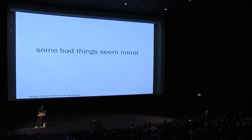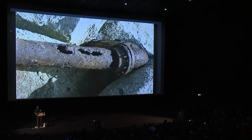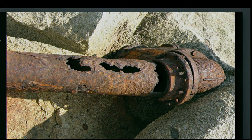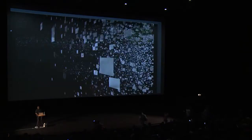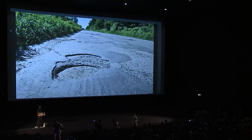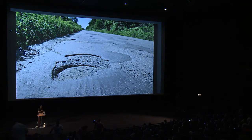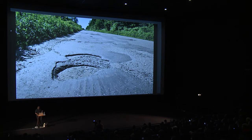Some bad things seem minor. Here's a simple little pipe — just a little hole, a little rust, not a big deal — until it leaks and causes lots of issues. Or you could have potholes. Potholes don't seem like such a big deal, but they can cause alignment problems and actually grow to become much bigger problems. They can cause accidents. If no one ever repaired the potholes and said 'eh, it's just a little minor hole,' then we'd have lots of other issues to worry about.